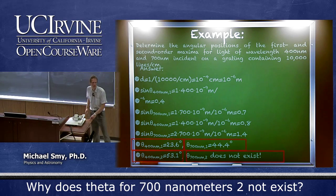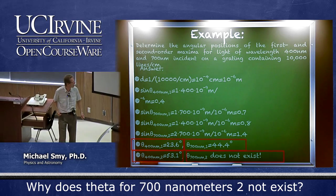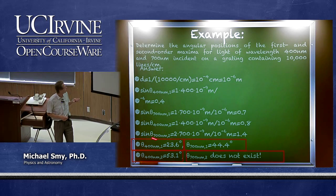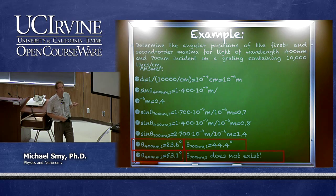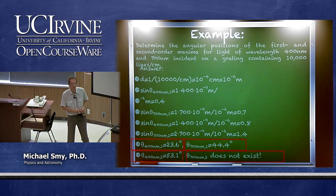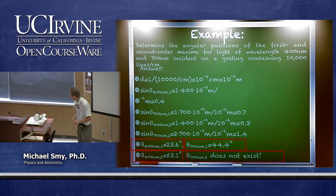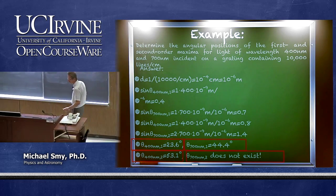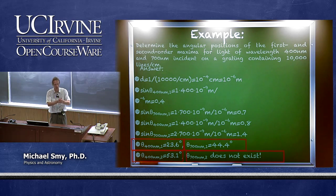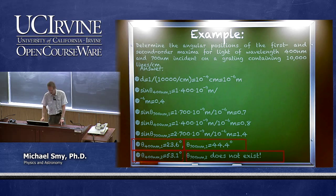Why doesn't the second order maximum exist for 700 nm? Because the sine would have to be 1.4, and there is no angle for which the sine equals 1.4. Eventually you cannot have arbitrarily high order maxima because you run out of angles within the 180 degree range.